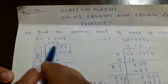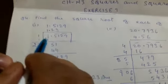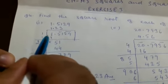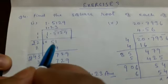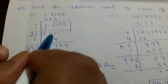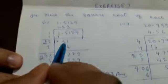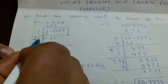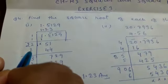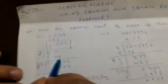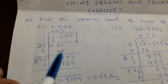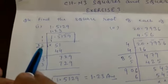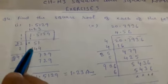The digit 1 will remain alone, so we divide 1 first: 1 times 1 is 1. After subtracting we get 0, and 1 plus 1 is 2. We bring down 51. We need a number to multiply such that the result is 51 or less than 51. We try 2: twenty-two times 2 is 44. We don't take 3 because twenty-three times 3 is 69, which exceeds 51. So we take 22 times 2 equals 44.